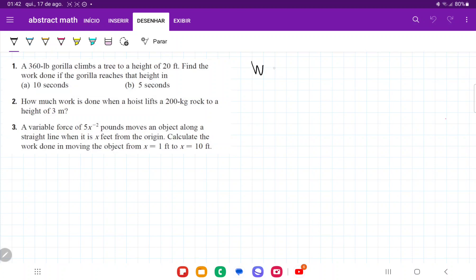Work is force times distance. It's the amount of force that you have to apply over a certain distance. The work that this gorilla is doing is lifting 360 pounds over 20 feet.